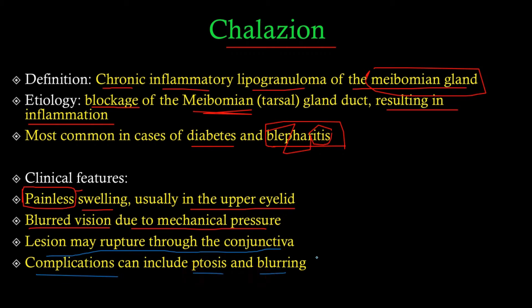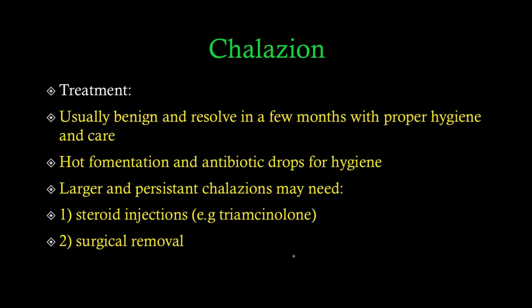Complications of a large chalazion include ptosis and blurring of vision. Ptosis refers to drooping of the eyelid — where the patient cannot open the eyelid properly. This is understandable: if the chalazion grows large enough, it adds weight and makes it difficult to open the eye fully.